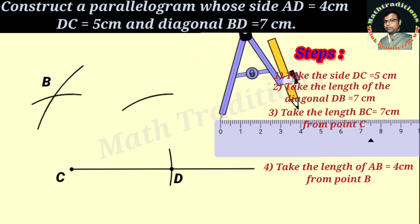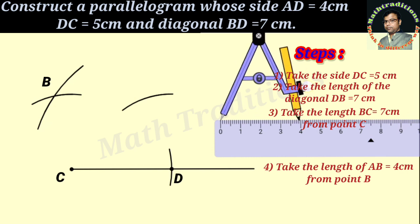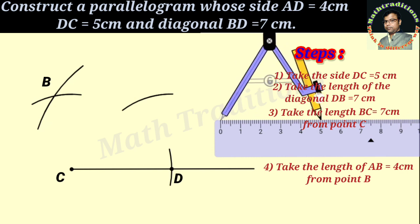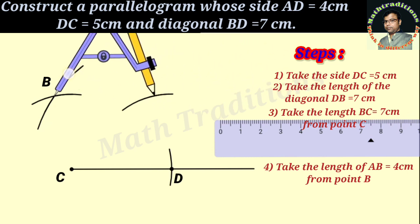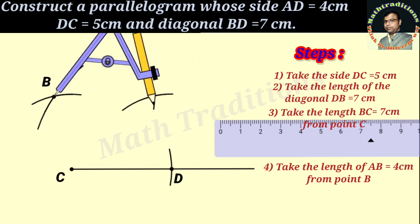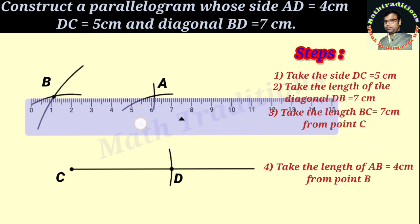We will take the length 5 cm from B on the previous arc to get our vertex A.